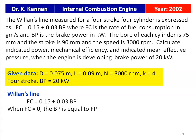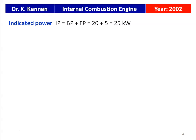When fuel consumption fc is zero, the brake power equals the friction power — this comes from the construction of the Willans line. We take brake power on the x-axis and fuel consumption on the y-axis; extending the line to the negative x-axis gives the friction power. So friction power FP = 0.15 / 0.03 = 5 kilowatts. The indicated power IP = BP + FP = 20 + 5 = 25 kilowatts.